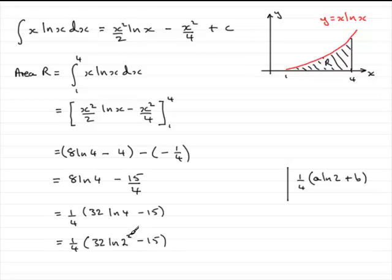Now by the law of logs where you have a power up here, this 2 here, the power 2, can come out the front and multiply with the 32. So what we've got is 32 times 2, which is 64. So you end up with equaling a quarter, 64 natural log of 2 minus 15.